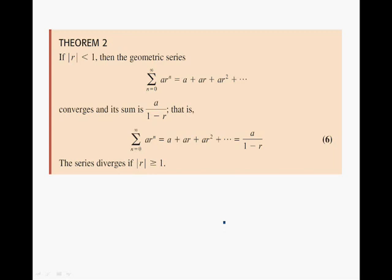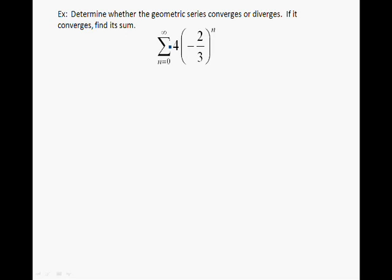Let's now look at an example. Determine whether the geometric series converges or diverges, and if it converges, find its sum. The first step is to identify A and R. We see right away that A is 4 and R is equal to minus 2 over 3. The absolute value of R is 2 over 3, which is less than 1. Therefore, following the theorem, the geometric series converges and it converges to A divided by 1 minus R, which simplifies to the given expression.